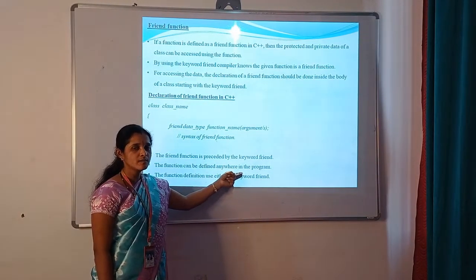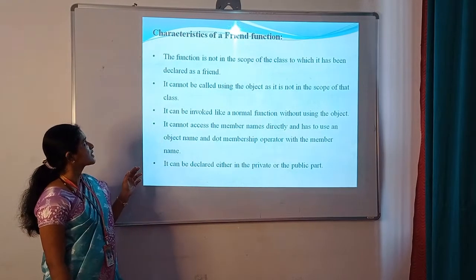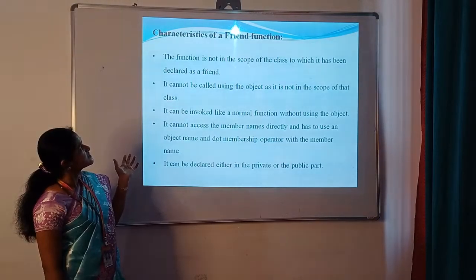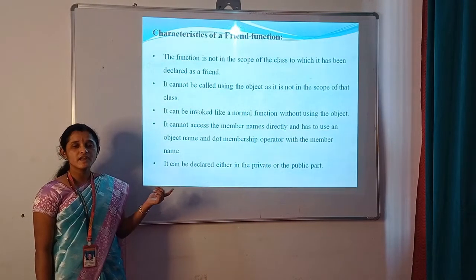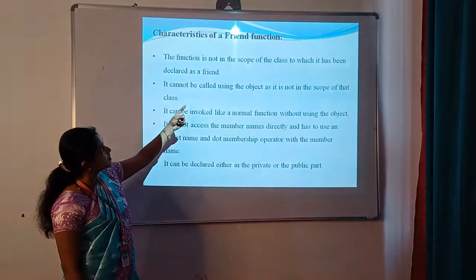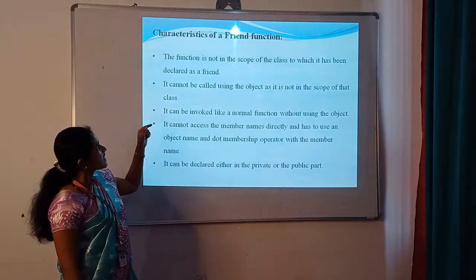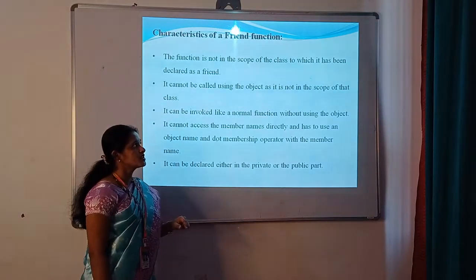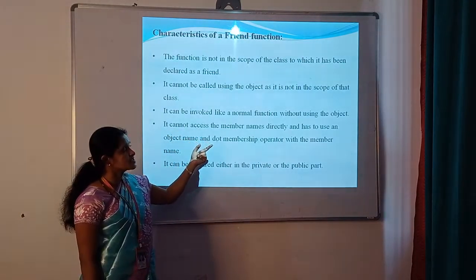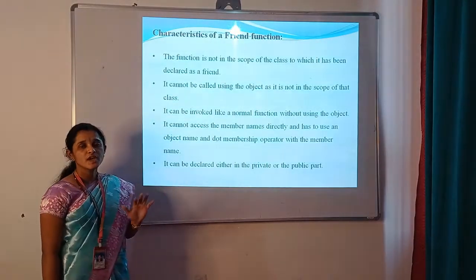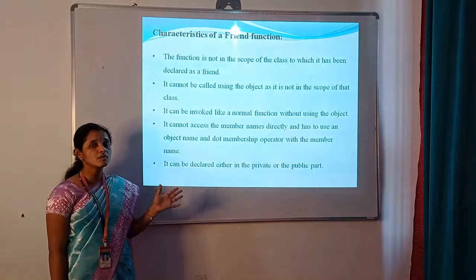Next is the data type — this is the return type of the function. Then the function name, which is a user-defined function name. We pass the argument list through the function. This is the syntax of the friend function. Next, complete the class body with a semicolon. The friend function is declared anywhere in the class body, preceded by the keyword friend. The function can be defined anywhere in the program, and the function definition does not use the keyword friend.